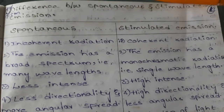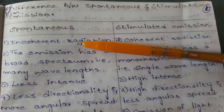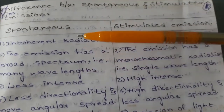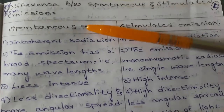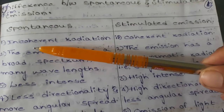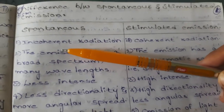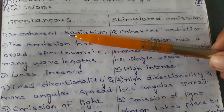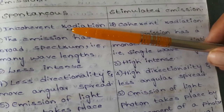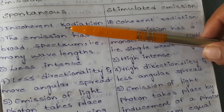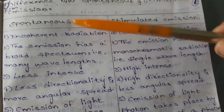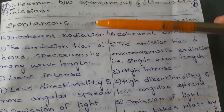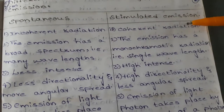The first point of spontaneous emission: it produces incoherent radiation. Incoherent radiation does not have the same phase, same state, same wavelength, same frequency, or same amplitude. Stimulated emission, by contrast, produces coherent radiation with the same amount of emission.